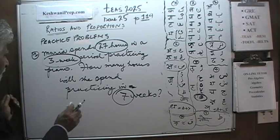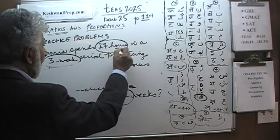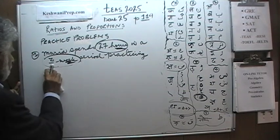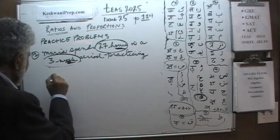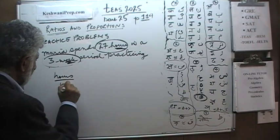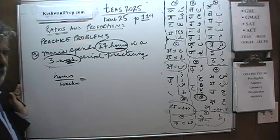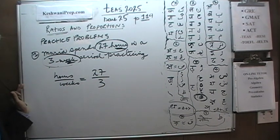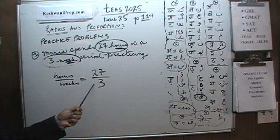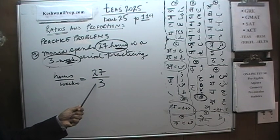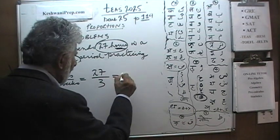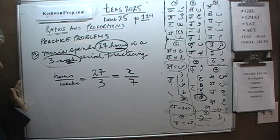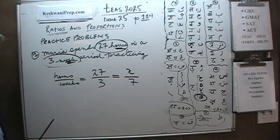Let's see what we can do. We need to set it up as a proportion and we are dealing with two things: hours and weeks. We are told that she spends 27 hours in a three-week period. The question is, at this rate, how many hours will she end up practicing in the period of seven weeks?